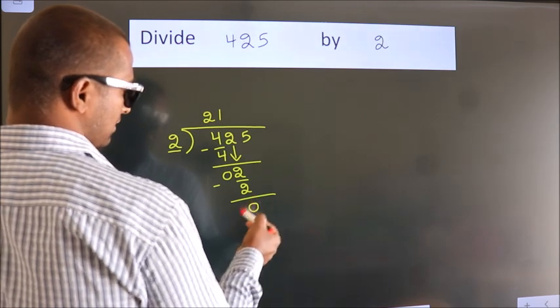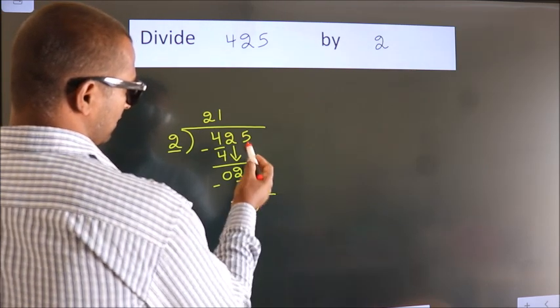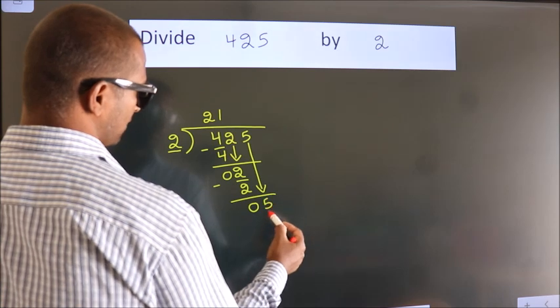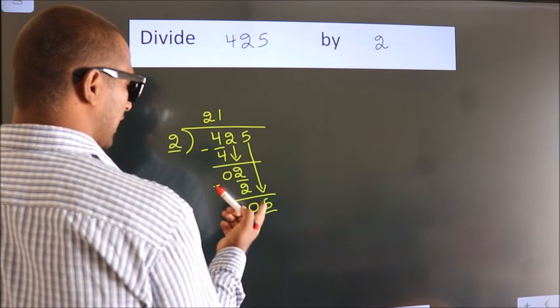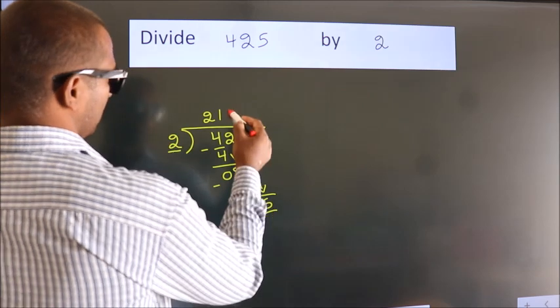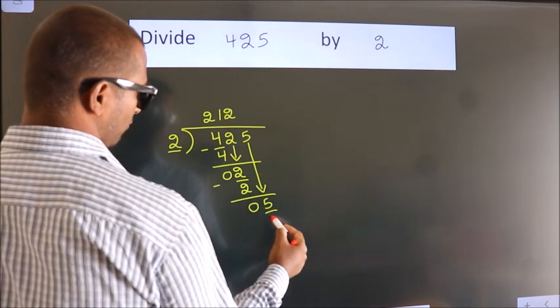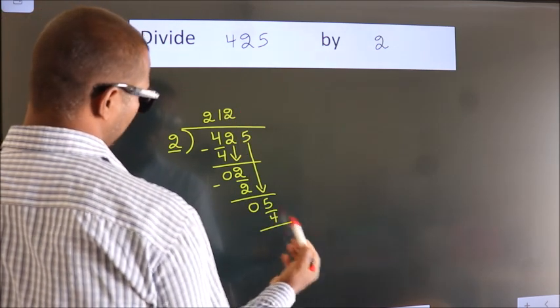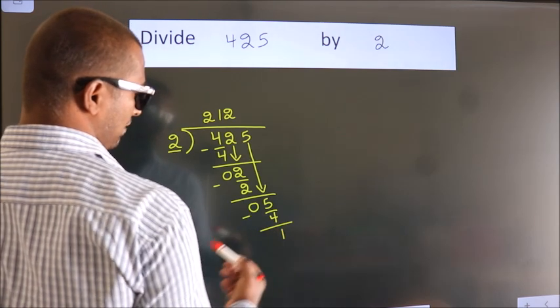After this, bring down the beside number. So 5 down, so 5. A number close to 5 in 2 table is 2 2s, 4. Now we subtract, we get 1.